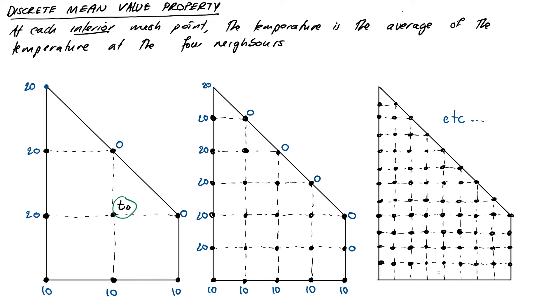So let's start with the first case where there's only one mesh point to solve for. So the discrete mean value property would tell us, therefore, that T0 would be one quarter, taking an average of the surrounding temperatures, which are 20, 10, 0 and 0. So that's a quarter of 30, which gives us 7.5 degrees there. Okay, so that's our warm up. Let's move now to our second case where we have nine interior mesh points.